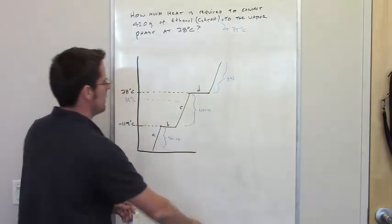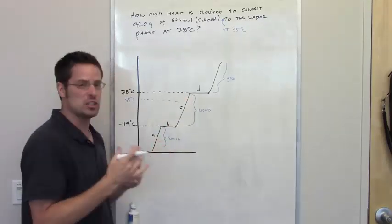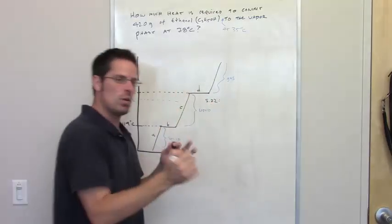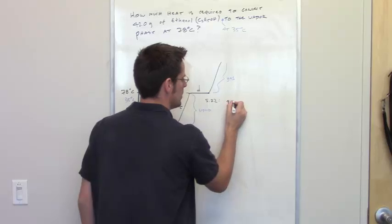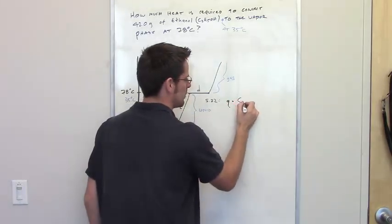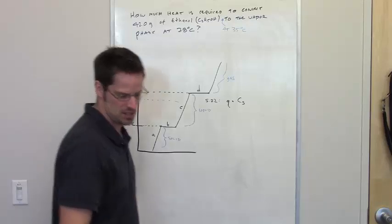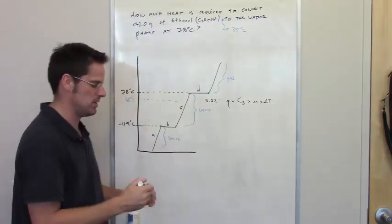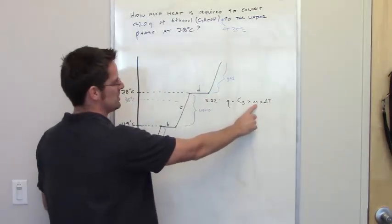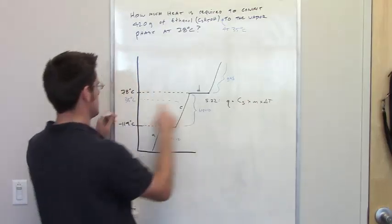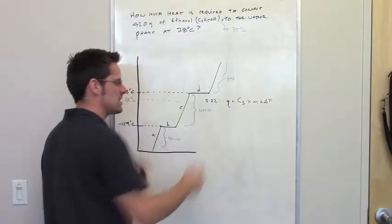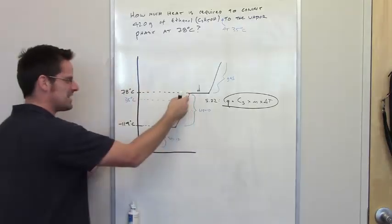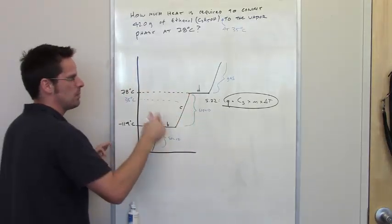Whenever you want to do a conversion up one of these slopes, the equation you're going to use is equation 5.22 from our text. That equation says the amount of heat Q required for that temperature warming equals the specific heat of the substance multiplied by its mass multiplied by the total change in temperature.